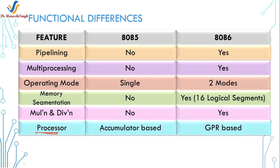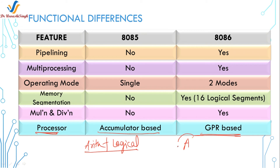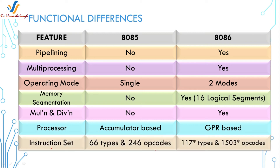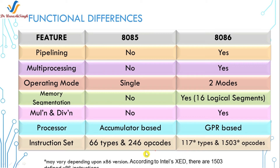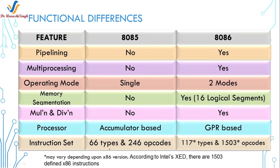The next feature is the type of processor. The 8085 is an accumulator-based processor because it uses the accumulator as the default register for all arithmetic and logical instructions and also stores intermediate results. The 8086 is a general-purpose register-based processor because there is no compulsion to use register A or the accumulator for every arithmetic and logical instruction, although a few instructions do require it. The final functional difference is the instruction set: the 8086 has a very powerful instruction set, while the 8085 has only 66 types of instructions and 246 opcodes. A powerful instruction set makes programming easier.